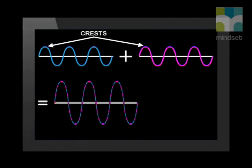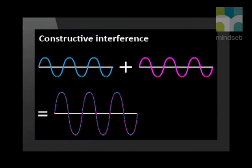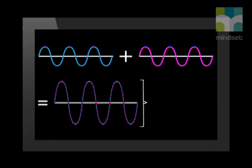Huygens knew that water waves can interfere with each other when they cross over each other. In some places, crests occur at the same time and they make a double-height crest. Or troughs occur at the same time and we get a double-deep trough. We say that they interfere constructively and we get a bigger amplitude. This is called constructive interference.